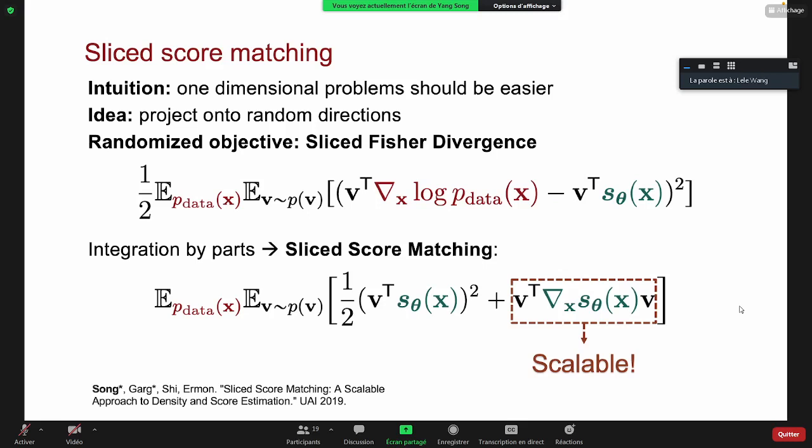So the theoretical results in that paper is actually in terms of the density. It's in terms of density, not in terms of a score. But you can imagine that if the density is consistent, then the score is also consistent.